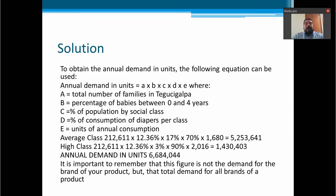So considering that the total number of families in Tegucigalpa is going to be factor A, the percentage of babies between 0 and 4 years is factor B, the percentage of the population by social class is factor C, the percentage of consumption of diapers per class is factor D, and E is the units of annual consumption. So the annual demand in units is calculated by multiplying A times B times C times D times E.